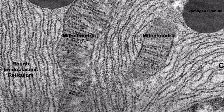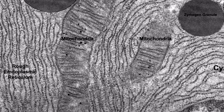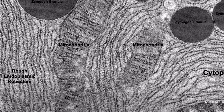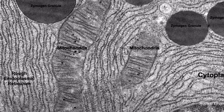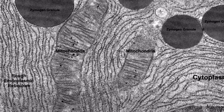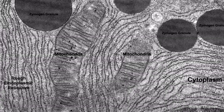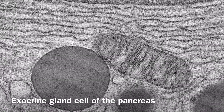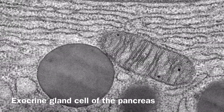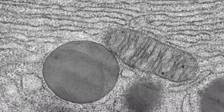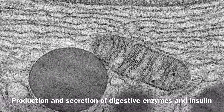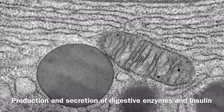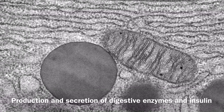In addition, the zymogen granules seen here are a real clue to us, because these are specialised storage organelles that are found in the exocrine pancreas and they allow the sorting, packaging, and regulated secretion of digestive enzymes. We can deduce therefore that this cell is in fact an exocrine gland cell of the pancreas, whose function is to produce proteins such as digestive enzymes that are secreted into the small intestine and insulin, a hormone that is secreted directly into the bloodstream.